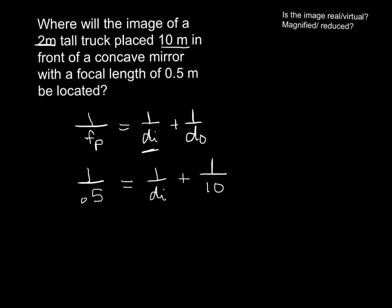So you want to use, on your calculator, you want to use that X to the minus 1 button. So this is going to be 0.5 to the minus 1, and then we're going to subtract the 1 tenth, because we need to move that over here. So that's going to be minus 10 to the minus 1, and that's going to equal 1 over DI. So we end up with 1 over DI equals 1.9. So we need DI, so we have to flip that over. And so when we flip that over, that is going to give us DI equals 0.53 meters.